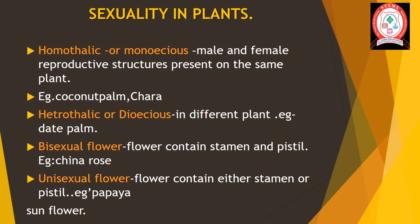The second type is heterothalic or dioecious plants, in which the male and female reproductive structures are seen in different plants. Examples include date palm and Marchantia, which is a bryophyte.